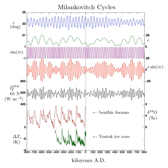Therefore, he deduced a 41,000-year period for ice ages. However, subsequent research has shown that ice age cycles of the Quaternary glaciation over the last million years have been at a 100,000-year period, which matches the eccentricity cycle.